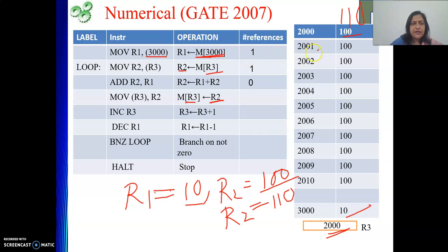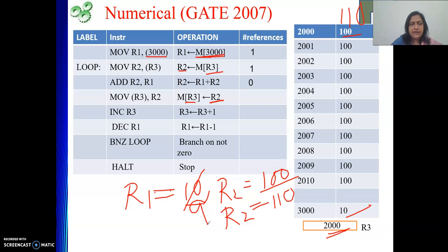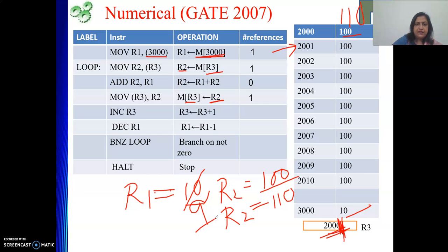After that we decrement R1, so R1 becomes 9. The counter is decremented. Then increment R3 — previously R3 was holding 2000, now R3 will hold 2001, pointing to the next memory location. Both the increment R3 and decrement R1 instructions operate only on CPU registers, so memory references for each of these is 0.